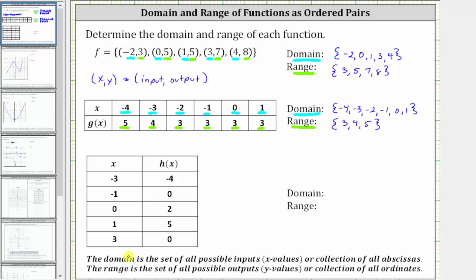For the third example, we have a function given as a vertical table, where again the domain is a set of all possible inputs or x-values. The domain is negative three, negative one, zero, one, and three. And the range is a set of all possible outputs, y-values, or function values, which are negative four, zero, two, and five.